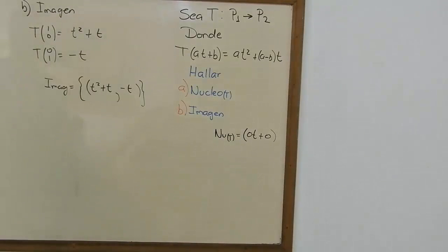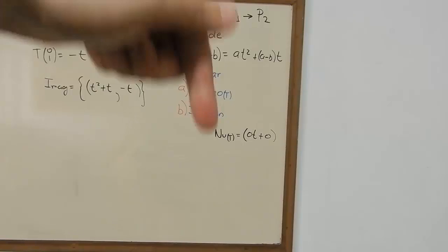And as you can see, it's only one vector. So the dimension of the starting point is equal to 0 plus 1.